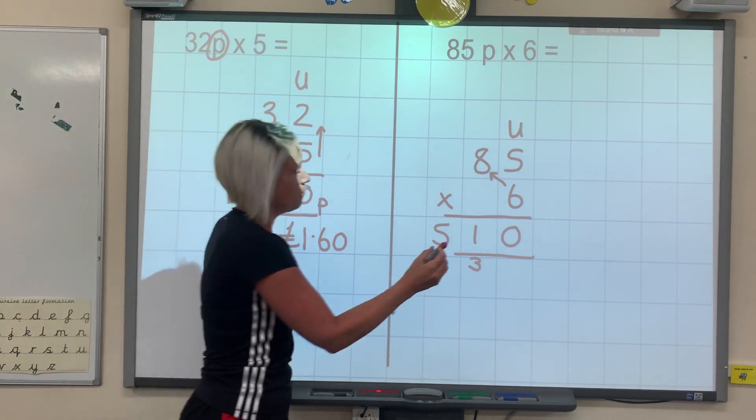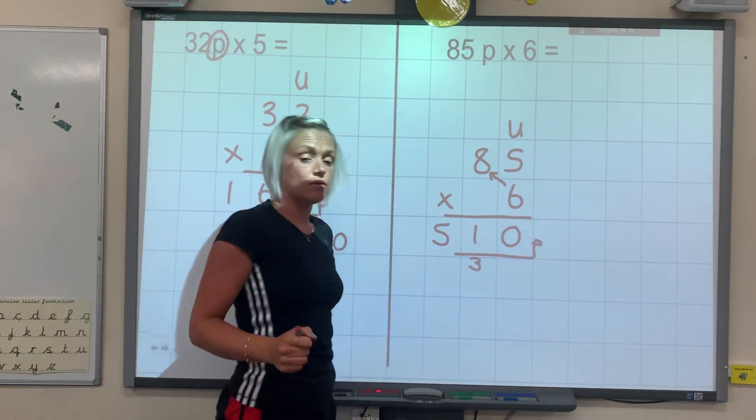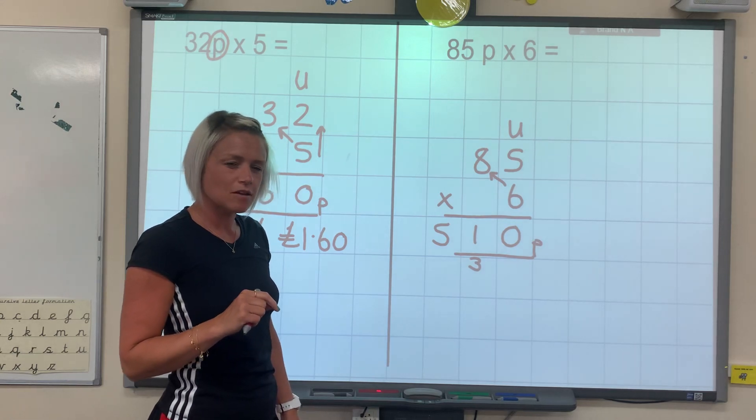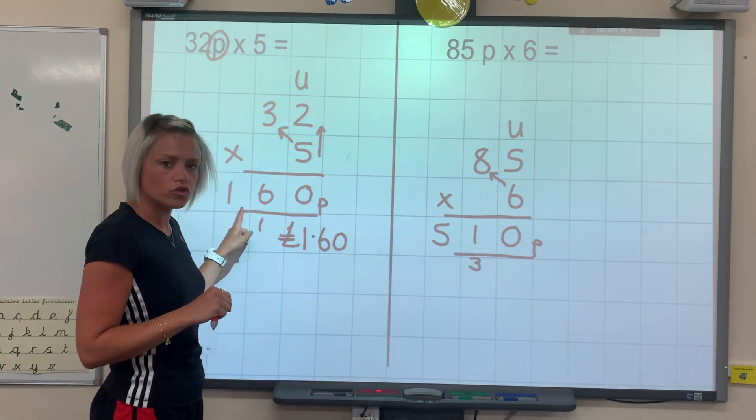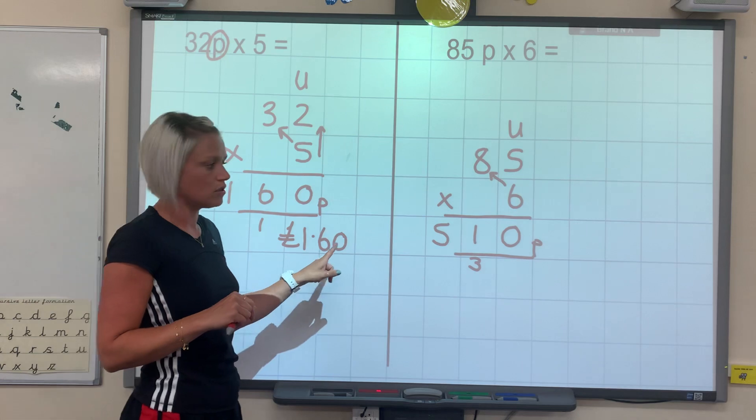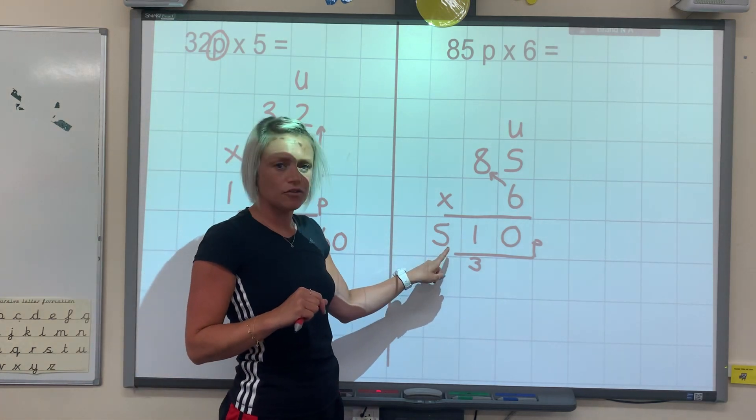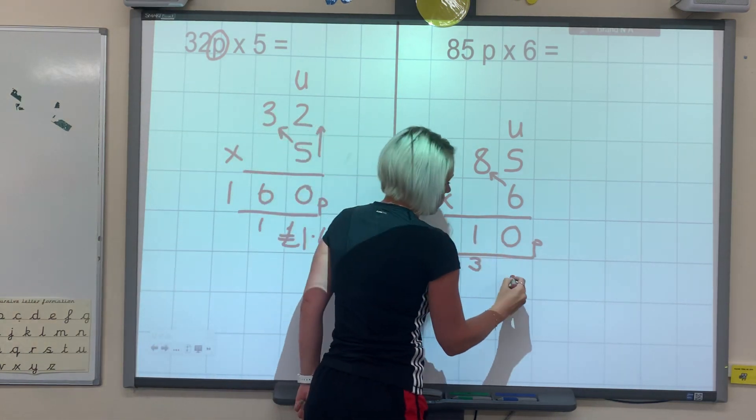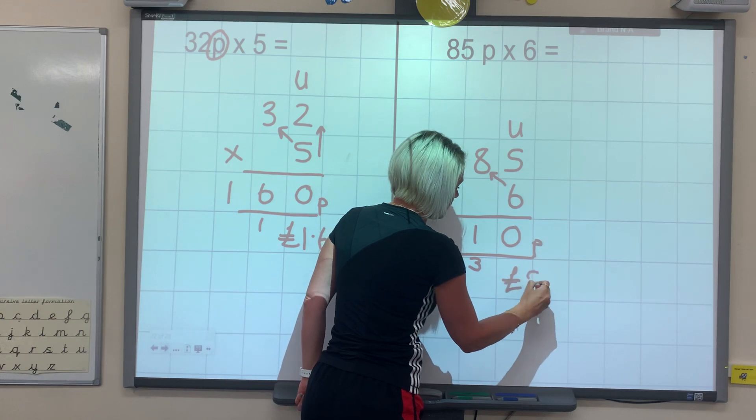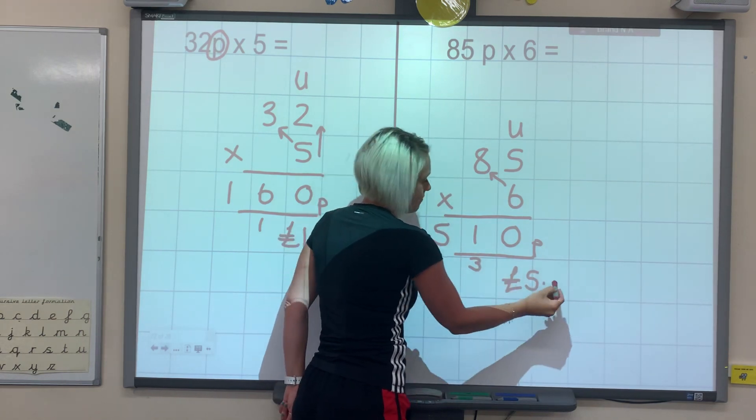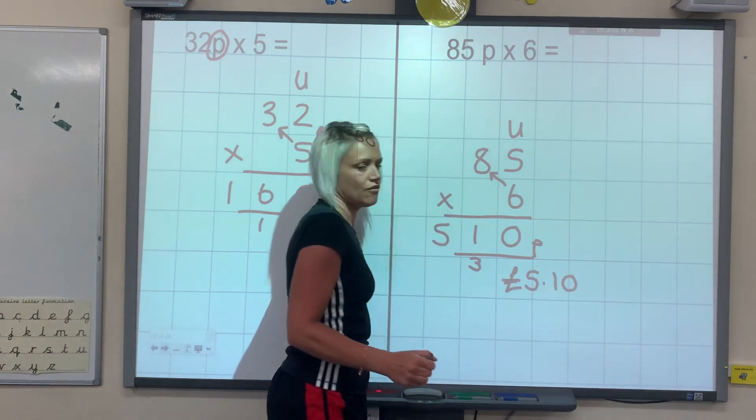Now, we can put 510 pence. Would it be wrong? But can you convert it into pounds and pence? So last time we had 100, so we had 1 pound. This time we've got 500, so we've got 5 pounds and we've got 10 pence. 5 pound 10.